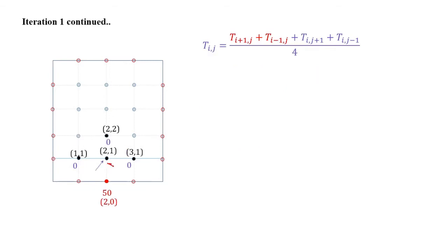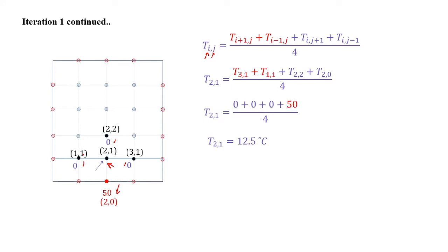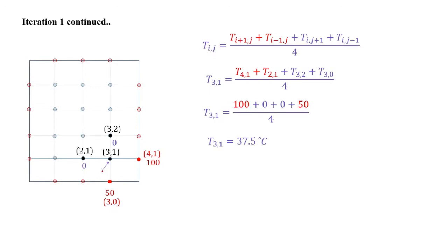Now let us move to the neighboring node T_21. Substituting i=2 and j=1 gives the following expression. The temperature of the bottom node T_20 is known from the boundary condition, while the remaining three neighboring nodes are taken from the initial guess. Substituting these values gives T_21 equal to 12.5 degrees Celsius. For node T_31, substituting i=3 and j=1, the right and bottom nodes are known from boundary conditions, while the top and left nodes use the initial guess, giving T_31 equal to 37.5 degrees Celsius.